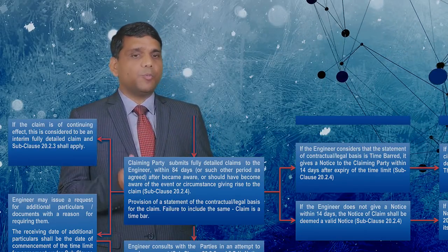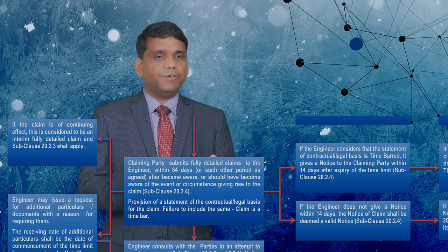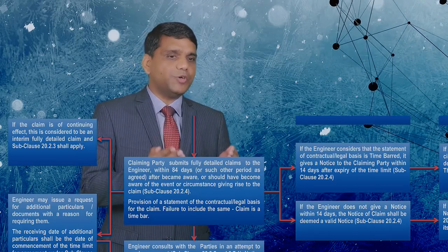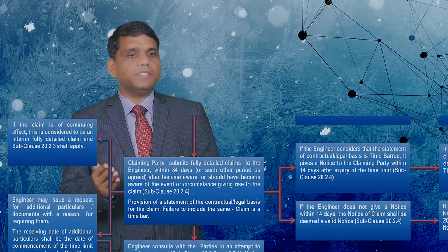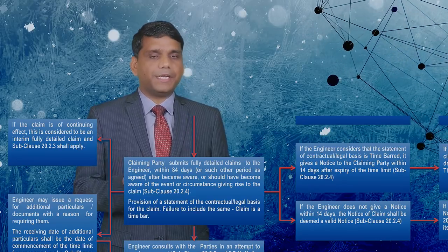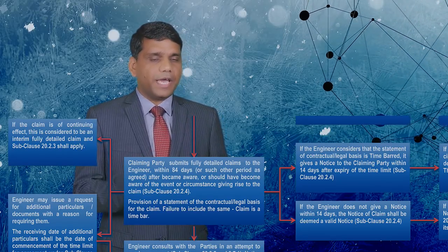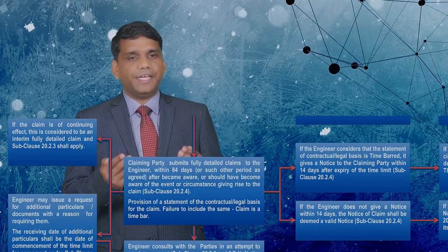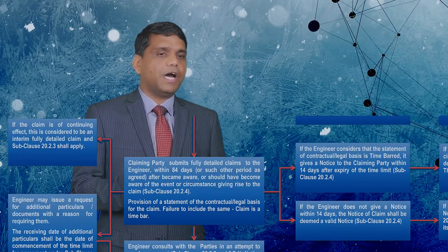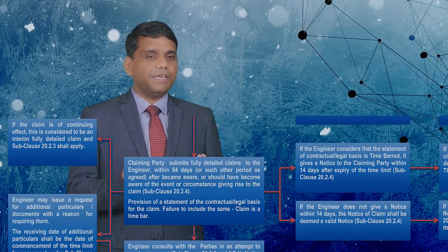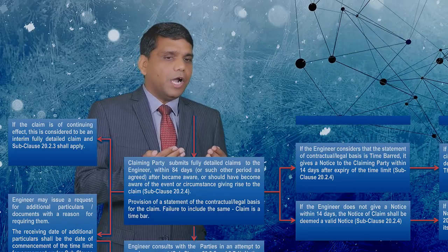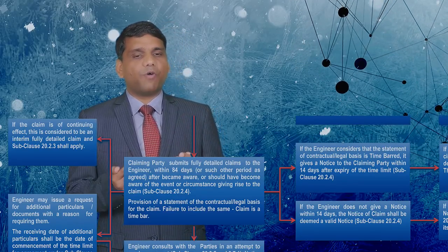The claiming party is obliged to submit a fully detailed claim to the engineer within 84 days — or such other period as agreed — after becoming aware or should have become aware of the events or circumstances giving rise to the claim. Along with this fully detailed claim, provision of a statement of the contractual and legal basis of the claim is required to be submitted.